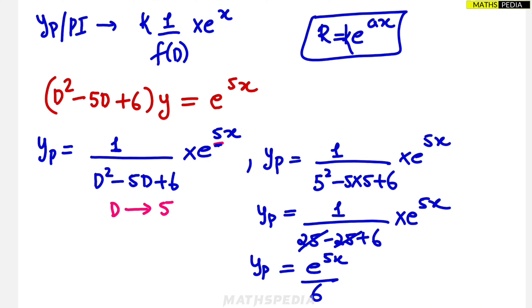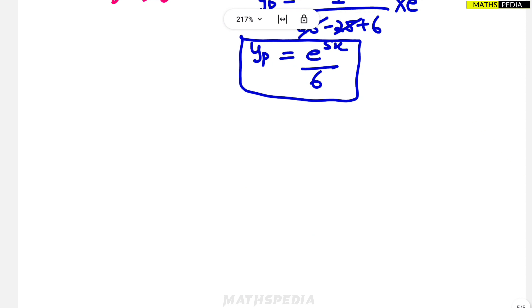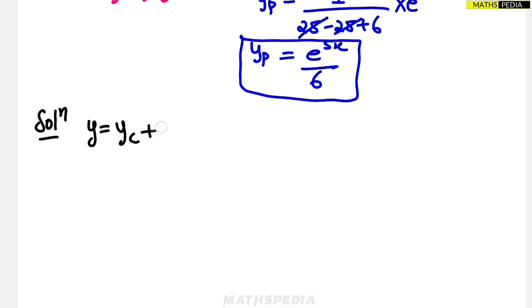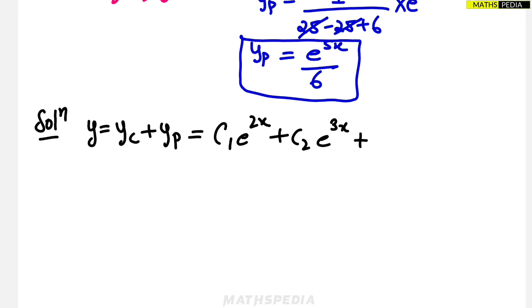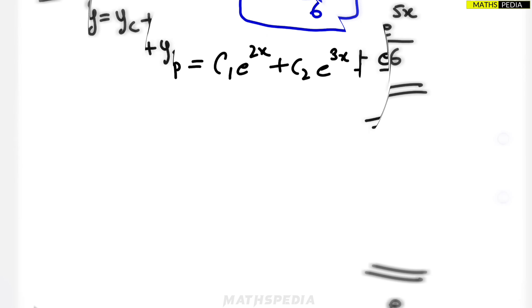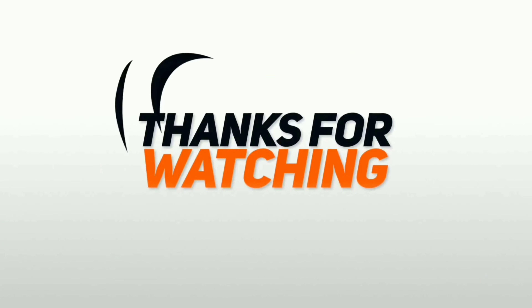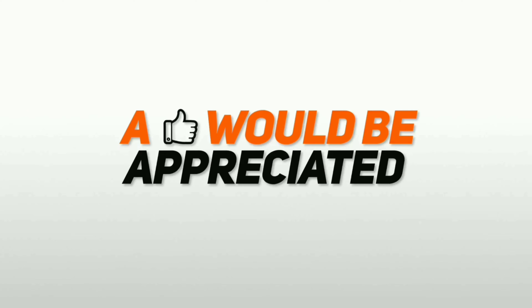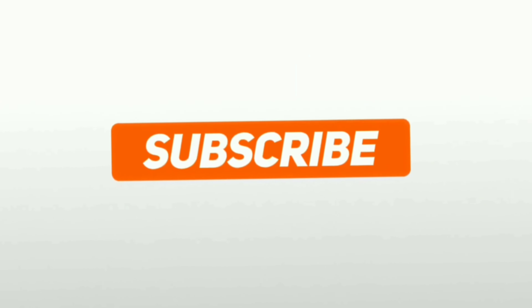Now substituting both values, the complete solution is: y = yc + yp = c₁·e^(2x) + c₂·e^(3x) + e^(5x)/6. This is the final answer.